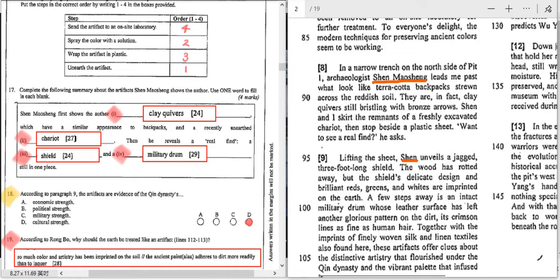So this archaeologist leads me past the site and they are in fact clay quivers still bristling. You just saw the word backpacks and now you see the words backpacks again. What look like terracotta backpacks across the reddish soil and they, the backpacks are, in fact, clay quivers. You find the plural s. So you can almost be sure that the clay quivers, which is two words, should be the answers to the first item.